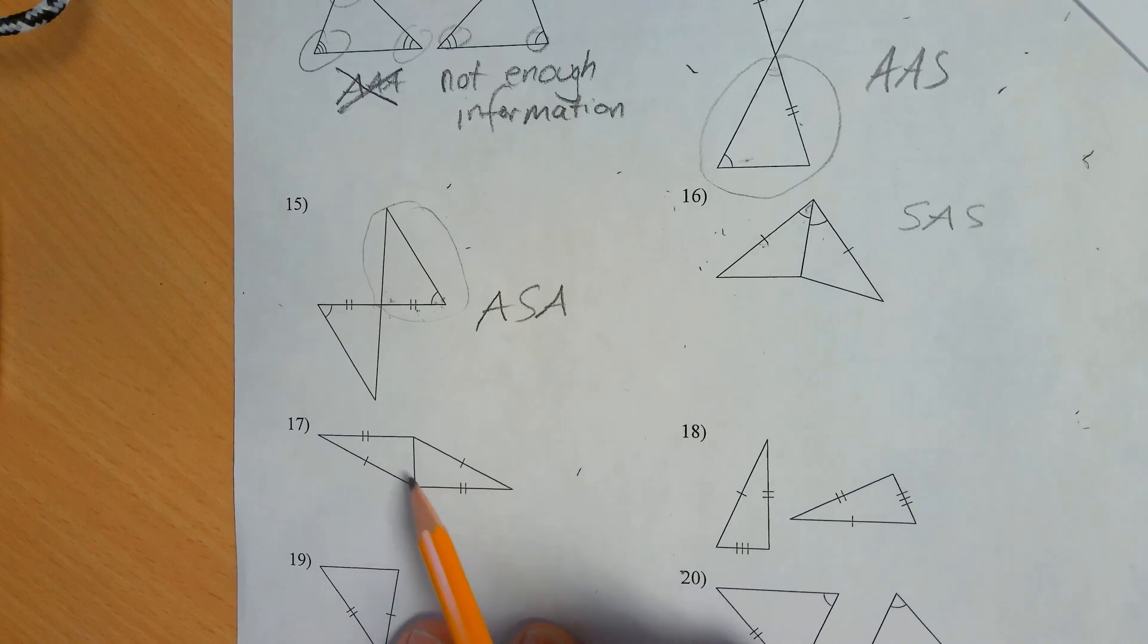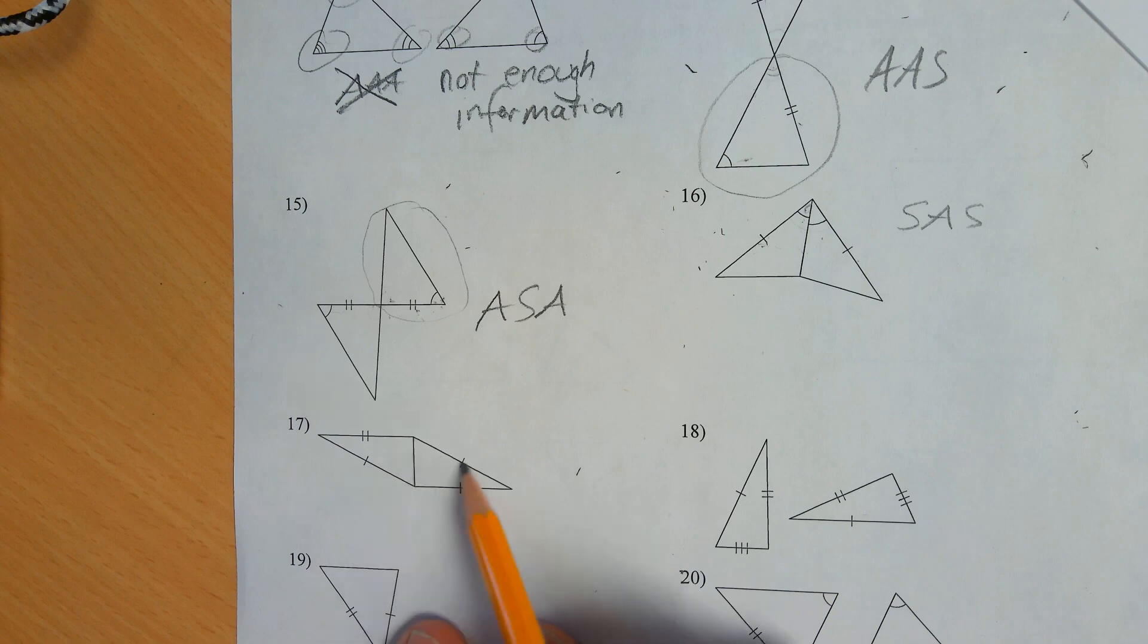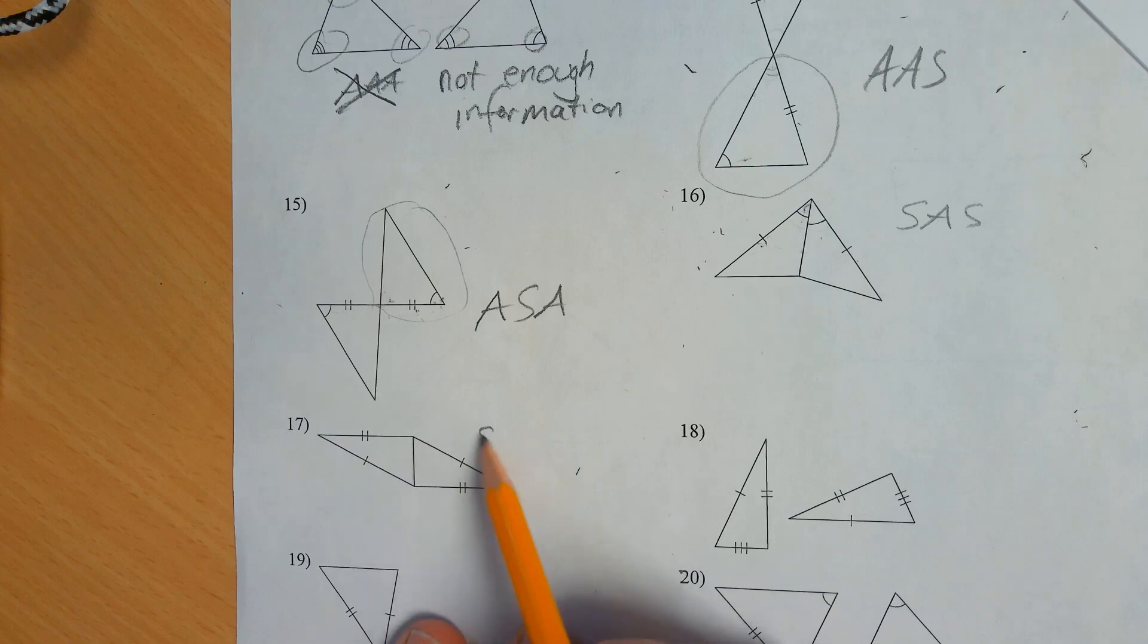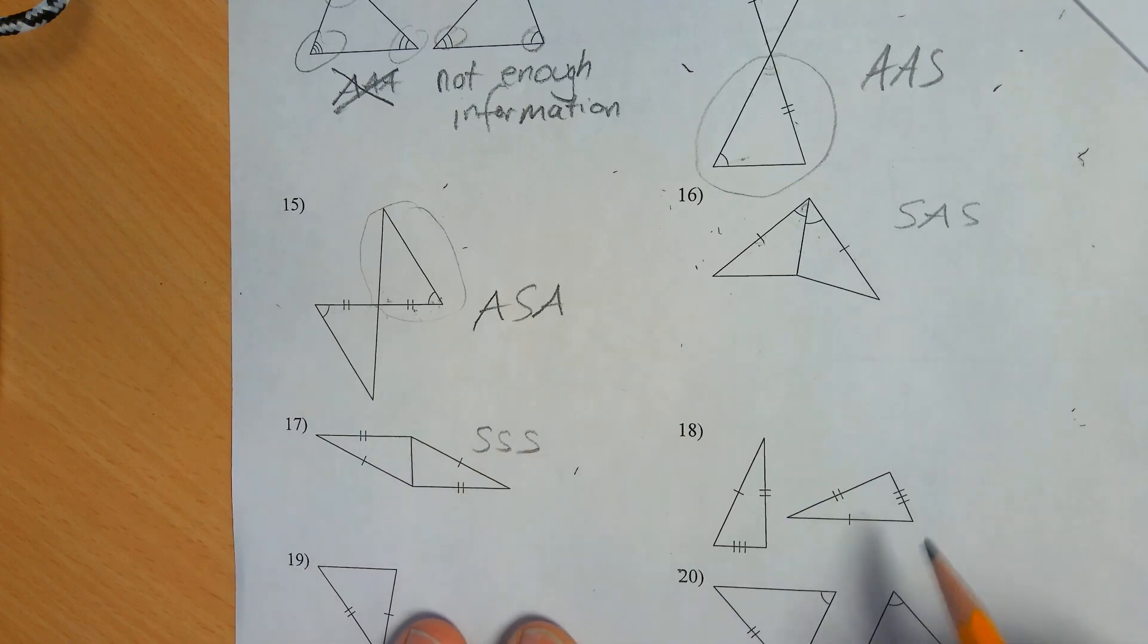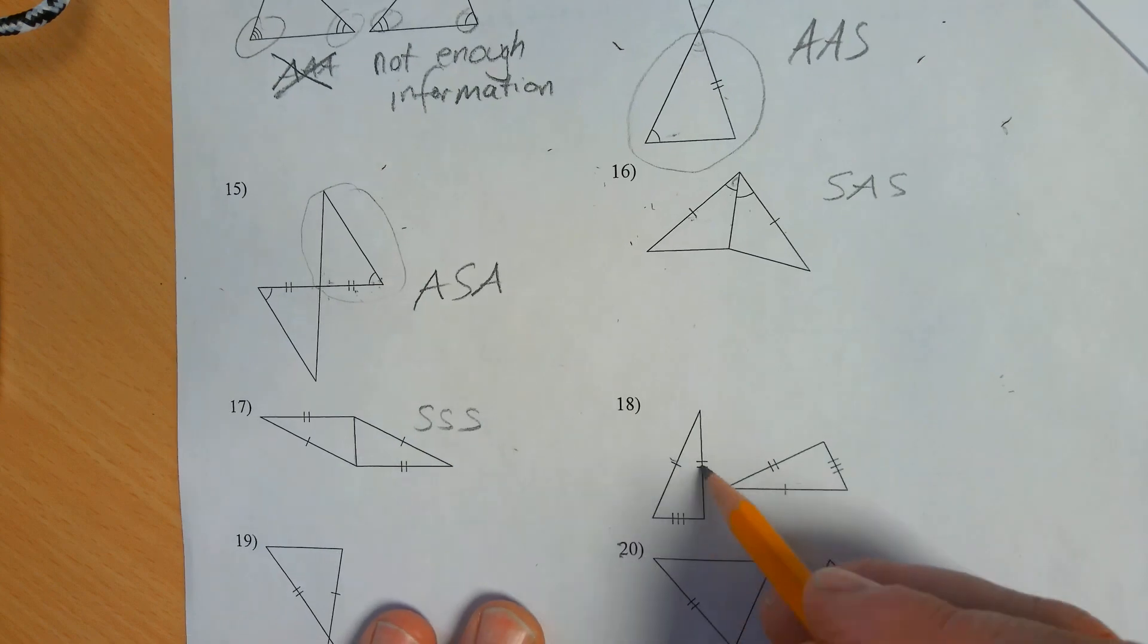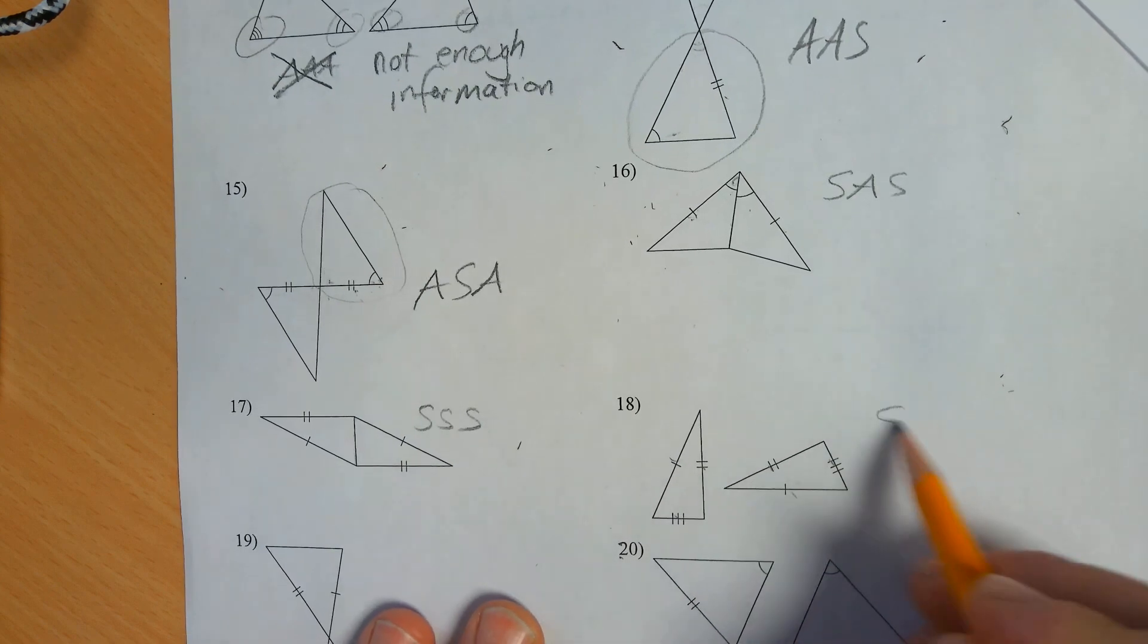Here we have a secret side that's shared. So this is in both. And we have a match there and a match there. That's three matches of sides. So side, side, side. Here we have three matches of sides. Side, side, side.